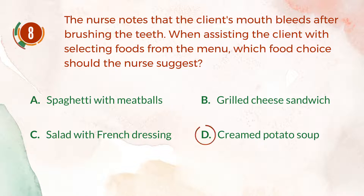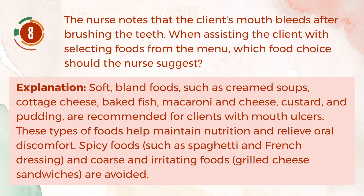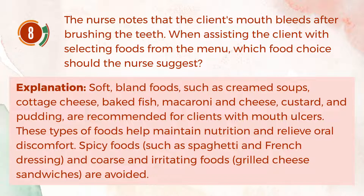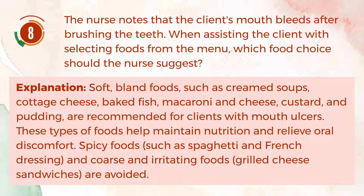The correct answer is D, creamed potato soup. Explanation: Soft bland foods, such as creamed soups, cottage cheese, baked fish, macaroni and cheese, custard, and pudding, are recommended for clients with mouth ulcers. These types of foods help maintain nutrition and relieve oral discomfort. Spicy foods such as spaghetti and French dressing, and coarse and irritating foods like grilled cheese sandwiches, are avoided.